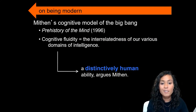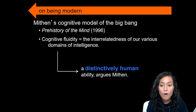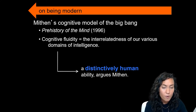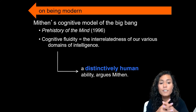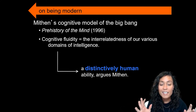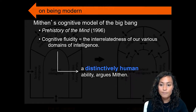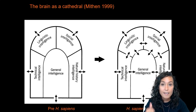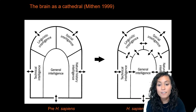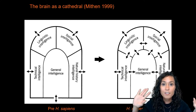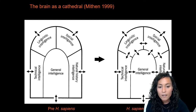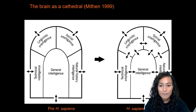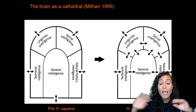Mithin first proposed this model in 1996 in a book called The Prehistory of the Mind. According to Mithin, cognitive fluidity refers to the interrelatedness of our various domains of intelligence and is a distinctly human ability. For Mithin, our brains resemble a cathedral composed of different types of intelligences: natural history, general, technical, linguistic, and social intelligence. These five different types of intellectual skills were fundamentally separate in our distant hominin ancestors — all knowledge about a specific domain was contained within that one part of the cathedral and could not be found anywhere else in the mind.